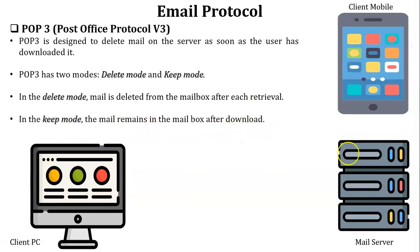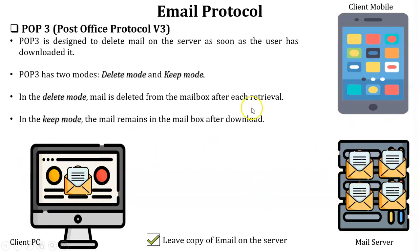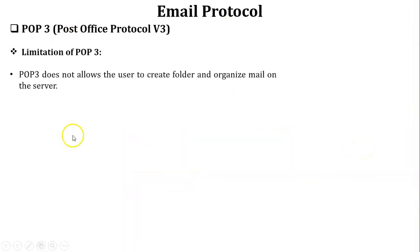The other mode is keep mode. In keep mode, the mail remains in the mailbox after download. When a user accesses mail using keep mode, there is an option on the mail server to leave a copy of the email on the server. When that option is marked, keep mode is active. All mails are downloaded to the client PC, but a copy of each mail remains in the mailbox. So if the user later wants to access old mail from another device, they can, because the mail remains on the server.